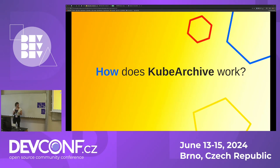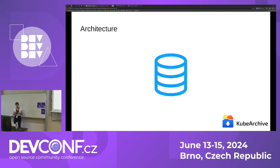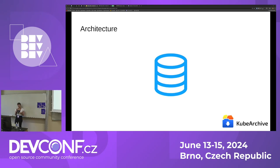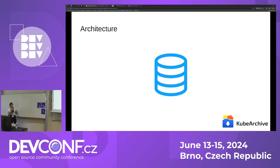Let's get into how kubearchive works and build the architecture diagram step by step. First thing we need is a database — some place to store the resources we are going to extract from etcd. We chose a PostgreSQL database because we wanted to have both structured and non-structured types of data. Fields like ID, name, and namespace are going to be structured, while the resource itself is going to be stored in a JSON field.